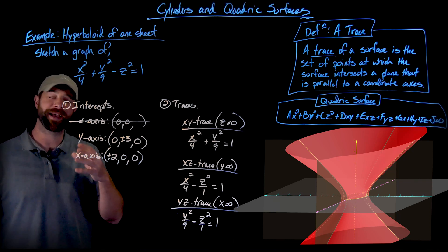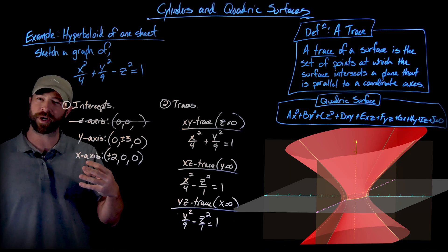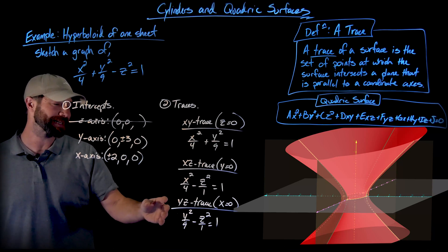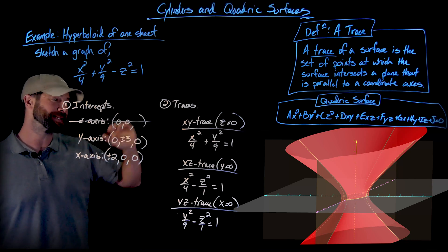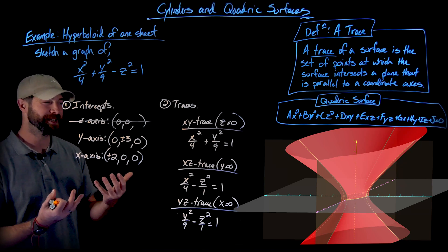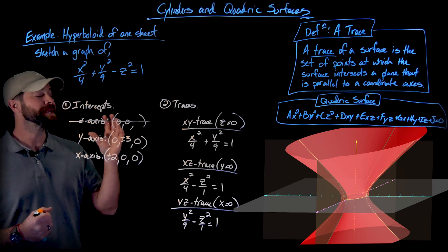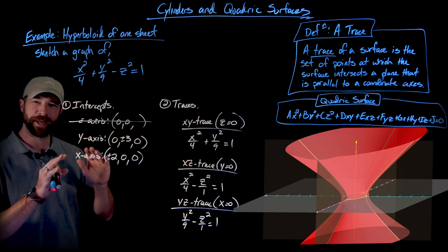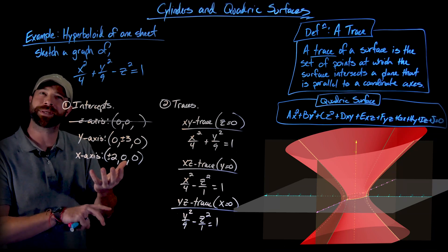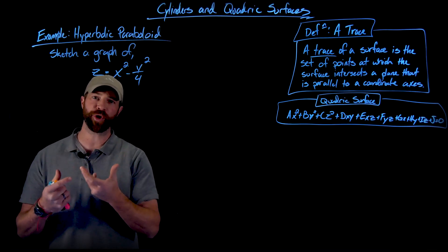If any of this feels unfamiliar, review conic sections — ellipses and hyperbolas. These hyperbolas have slant asymptotes with asymptotic behavior along these axes. This surface looks like a fancy vase, though it's infinite vertically. This is a hyperboloid of one sheet — one continuous surface, like one piece of paper. The hyperboloid of two sheets, which we'll see later, requires two separate pieces and is not one continuous surface.